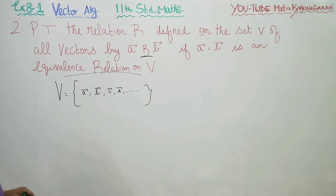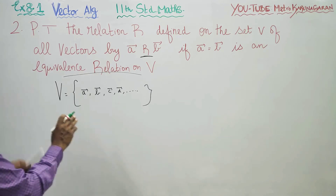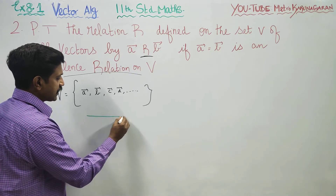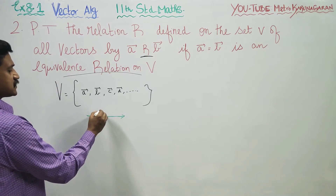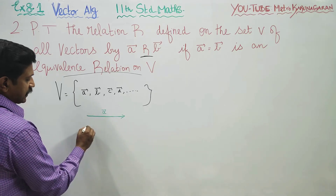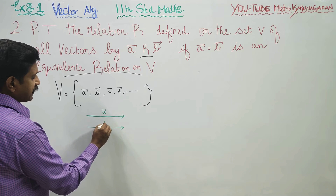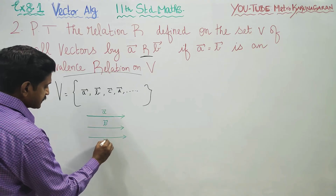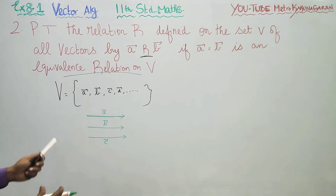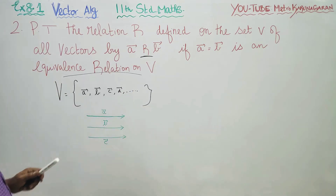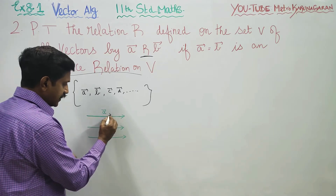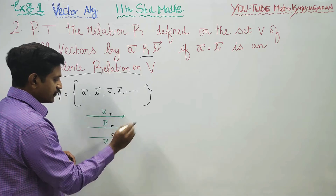The rule is that A vector is equal to B vector. To prove this, I am going to choose any three vectors: A vector, B vector, and C vector — chosen from the set with the condition that they have the same length. For example, A has length 5 cm, B has length 5 cm, and C has length 5 cm.